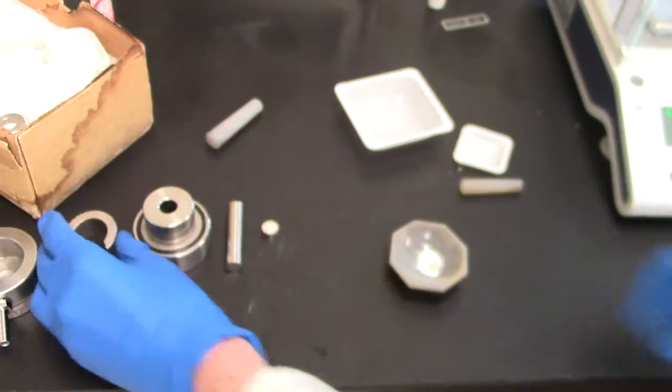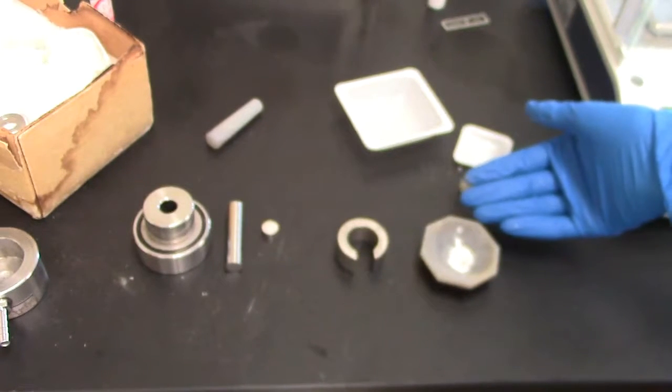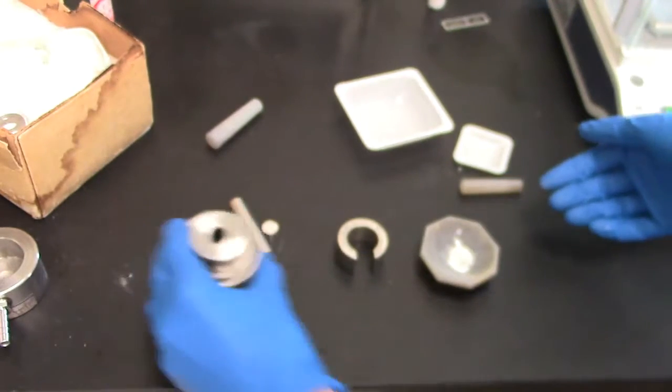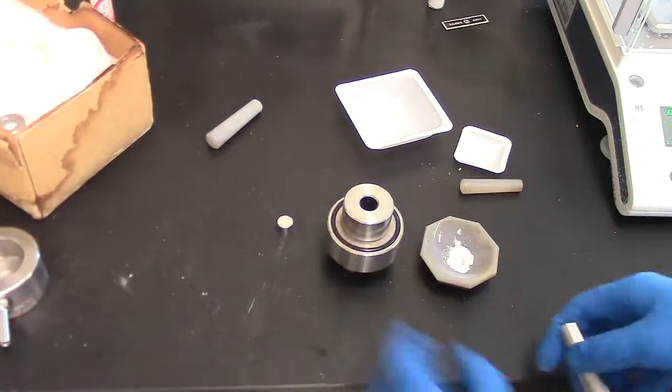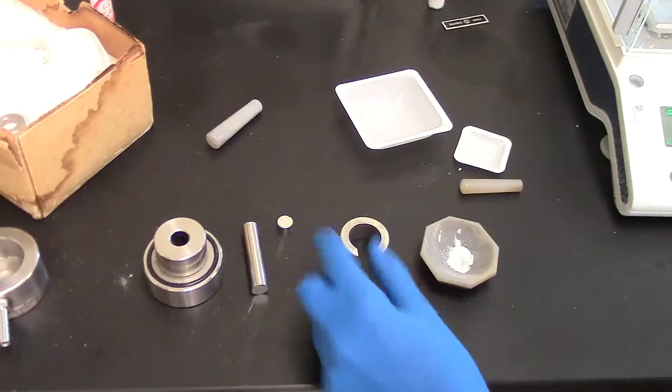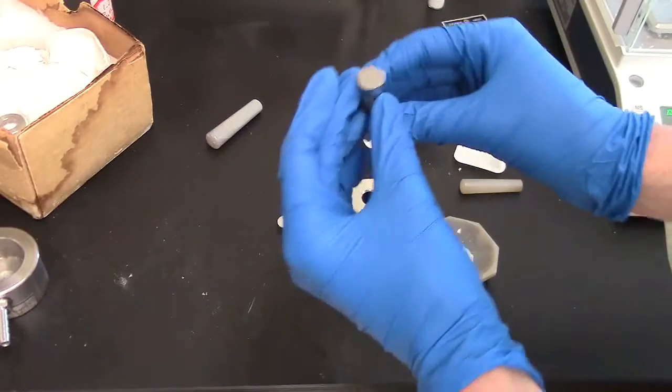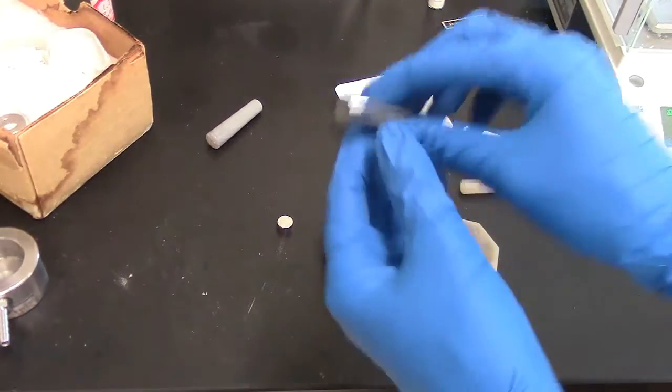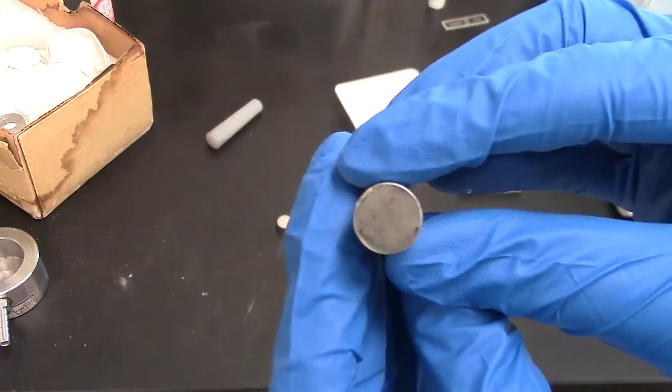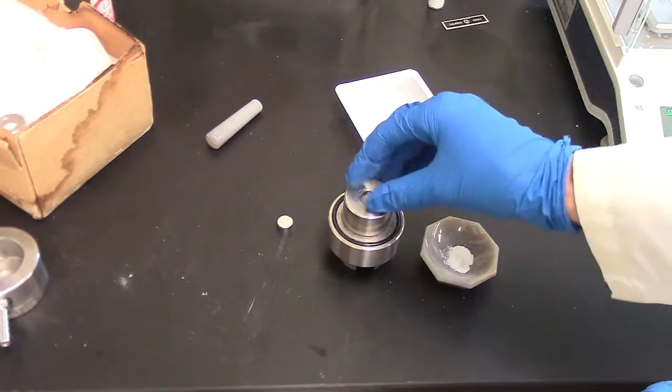Next, we want to put our ground-up substance and KBR into the press. You'll need all these different pieces here. So you first set down this part, then take this bigger part. There are two sides to this. There's a flat, shinier edge, and then there's a rough edge. You want the flat, shinier edge facing upwards.